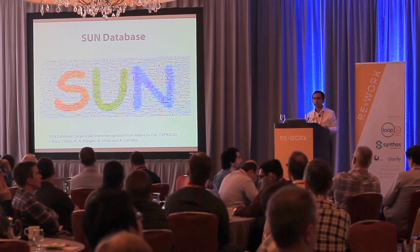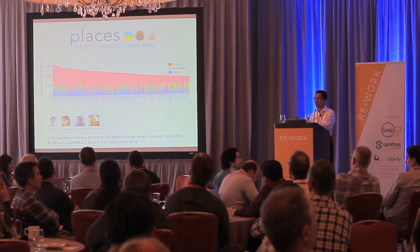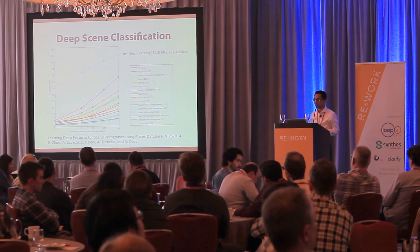At that time, we used the standard database we built called the SUN database. But as already mentioned, that database is too small for deep learning. Together with a lot of colleagues at MIT, we built the Places dataset that was shown this morning. By doing deep learning, we get a significant performance improvement.